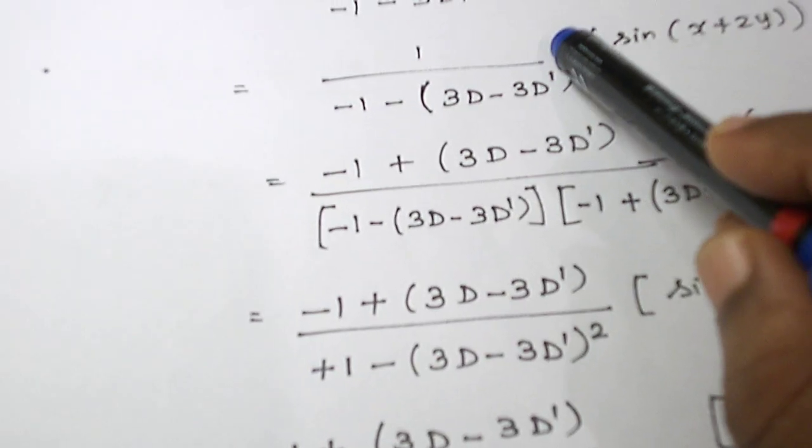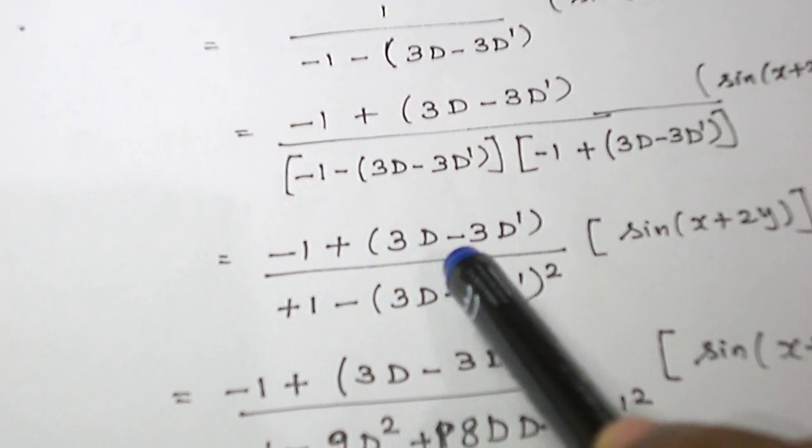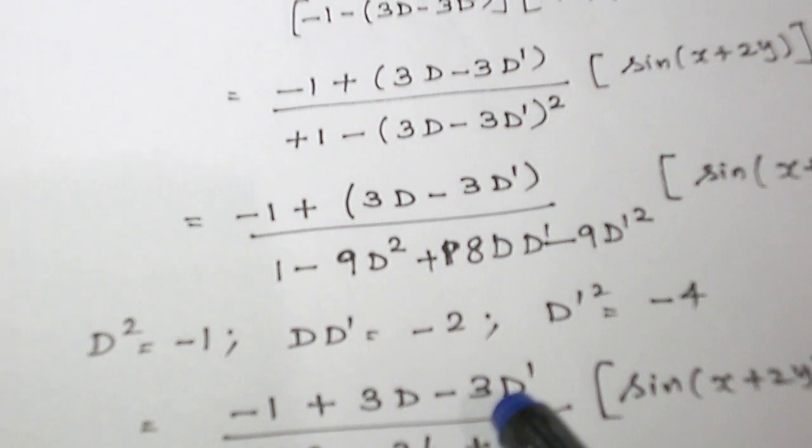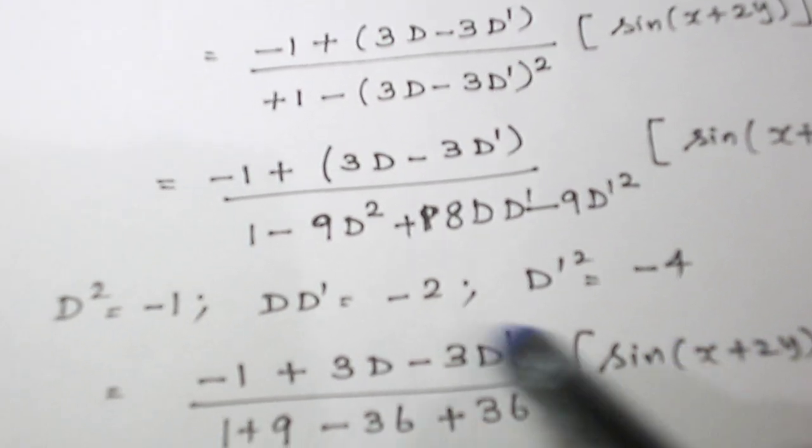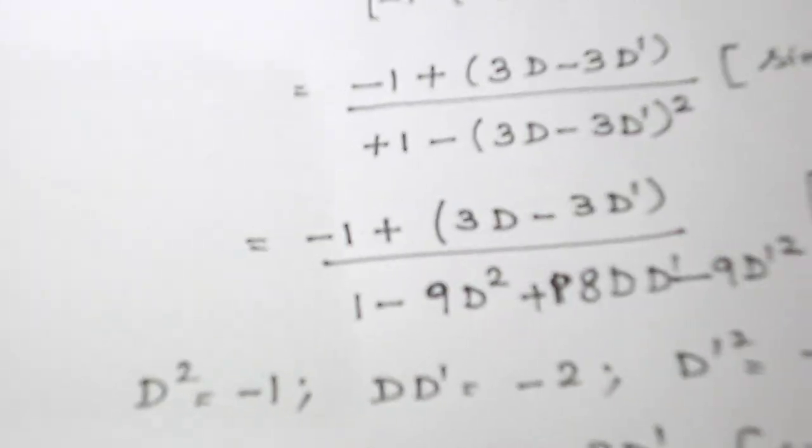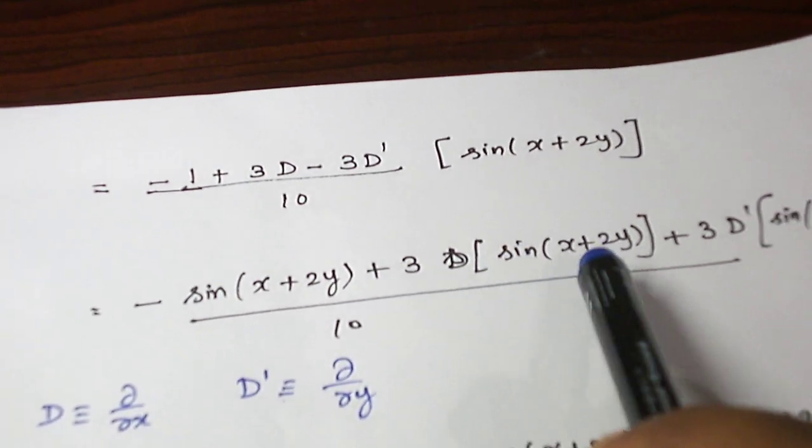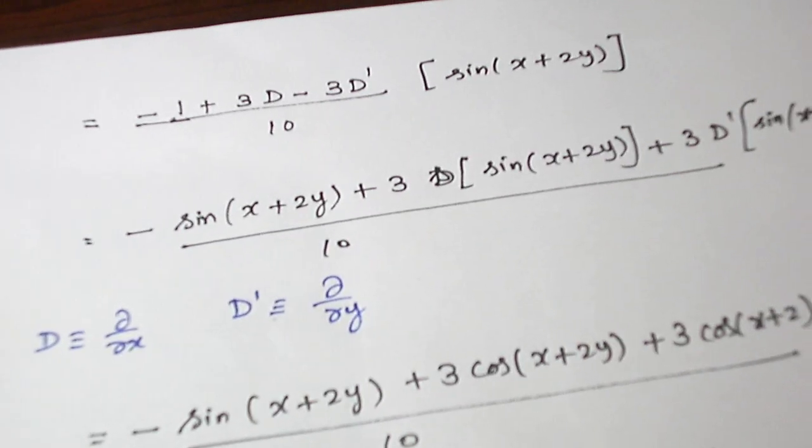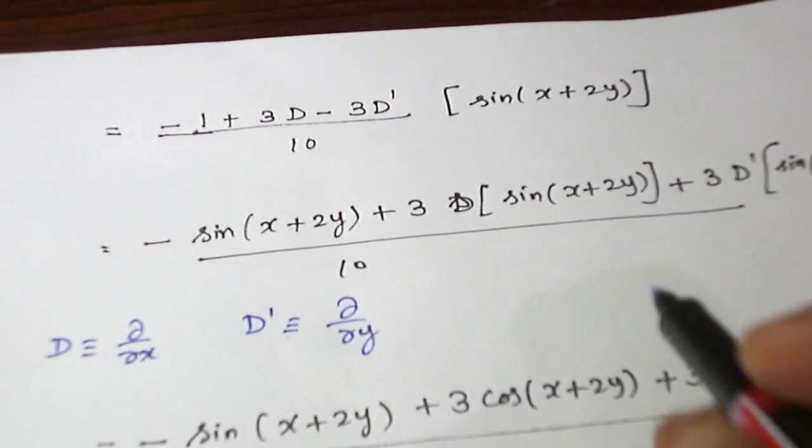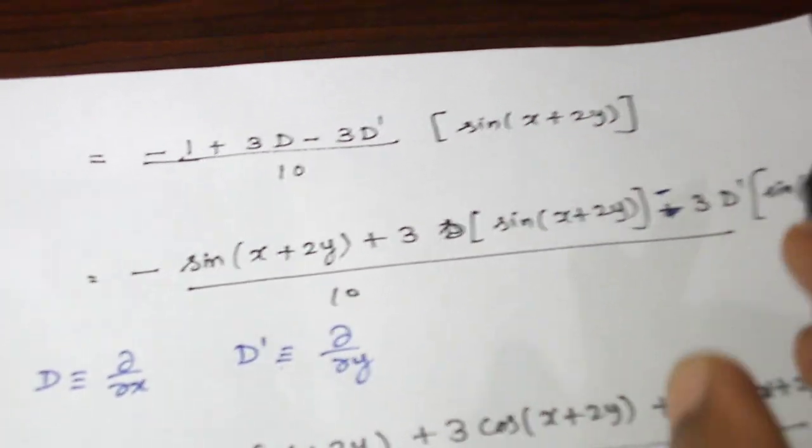Numerator, we are not considered up to now. Look at the numerator, minus 1 plus 3d minus 3d dash. So when we multiply this sine of, bring it sine of x plus 2y inside the operator, what do we have? Minus sine of x plus 2y plus 3 into d of sine of x plus 2y minus 3d dash of sine of x plus 2y.